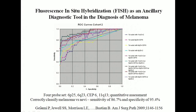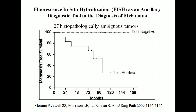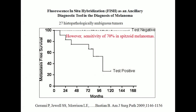This test correctly classified their melanoma versus nevi set with a sensitivity of 87% and a specificity of 95%, so they thought it was a good test for difficult melanocytic lesions. They then applied it to a cohort of 27 histopathologically ambiguous tumors including spitzoid neoplasms. Those that tested negative had a long period of metastasis-free survival, but those testing positive had a worse outcome. However, when looking at only spitzoid neoplasms, the sensitivity wasn't that good, so they went back to work.